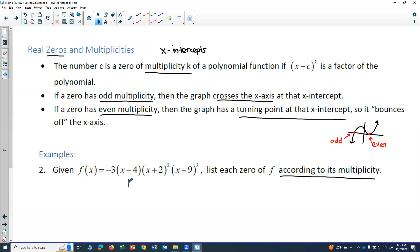To solve that, I would go ahead and say x minus 4 equals 0. So x equals 4. Now I look at the exponent on that.